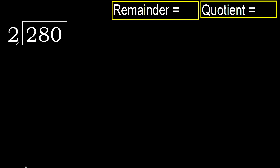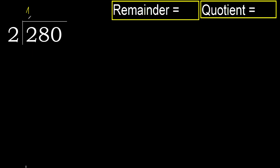280 divided by 2. Let's start with 2. 2 multiplied by which number is nearest to 2 but not greater? 2 multiplied by 2 is 4, which is greater. 2 multiplied by 1 is 2, it's not greater.